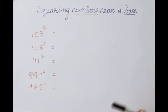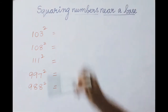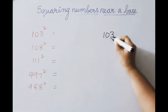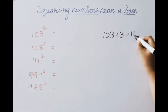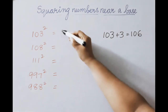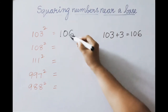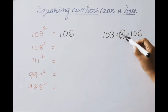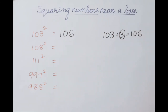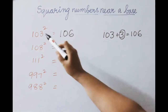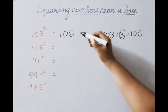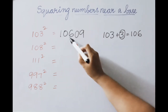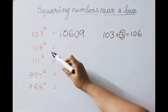Next example: 103 squared. Base is 100. The excess value is 3. For 103, add the excess value: 103 plus 3 equals 106 — first part answer is 106. Now square the excess value: 3 squared is 9. Since base is 100, two digits are allowed, so write 09. Therefore 103 squared equals 10609.